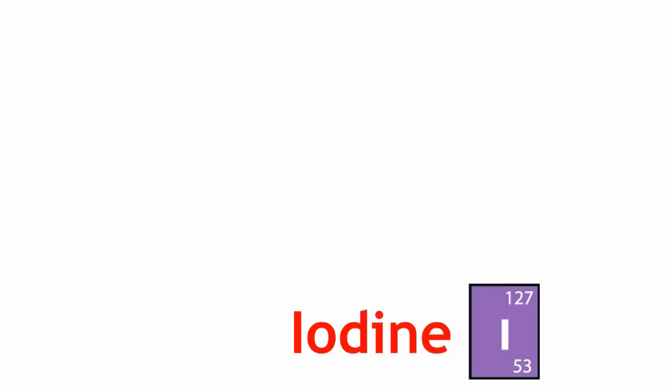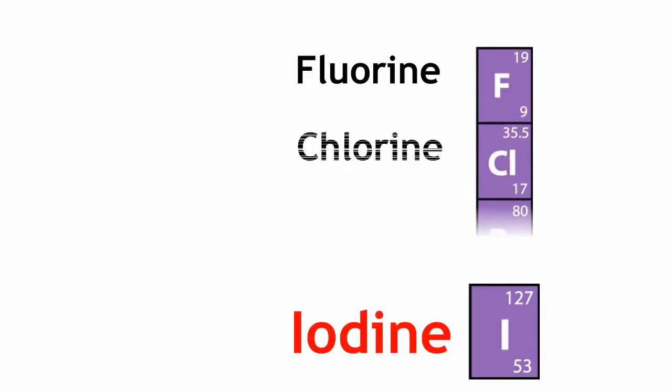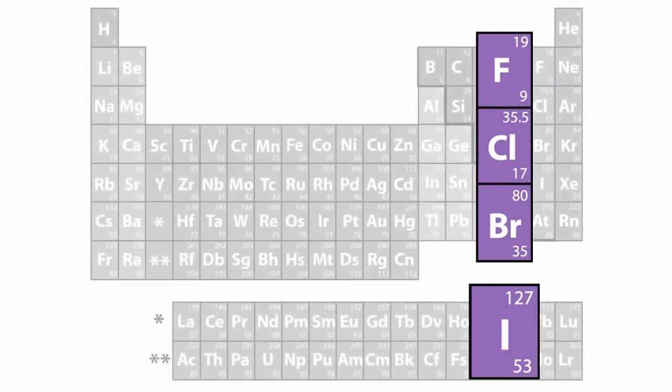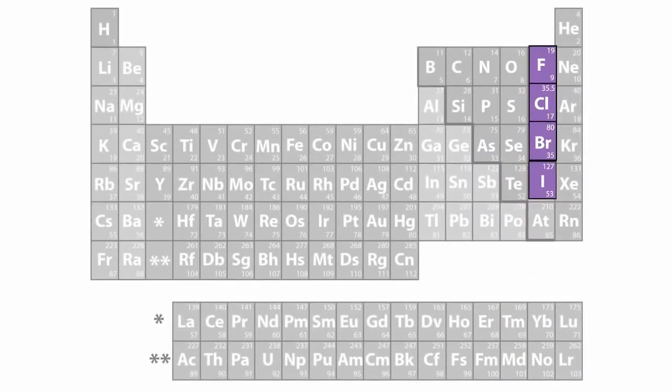But Mendeleev noticed that iodine has similar properties to fluorine, chlorine, and bromine, so he broke his own rule and put iodine within this column.